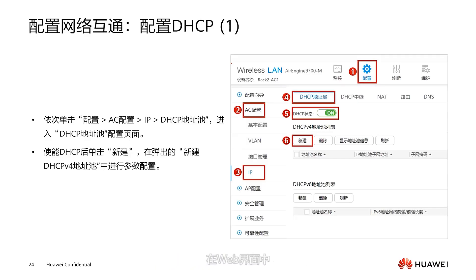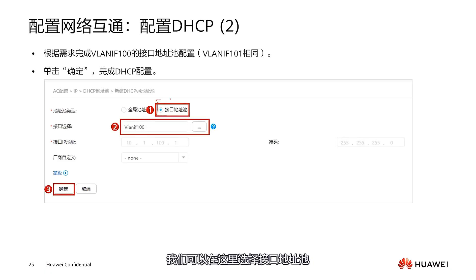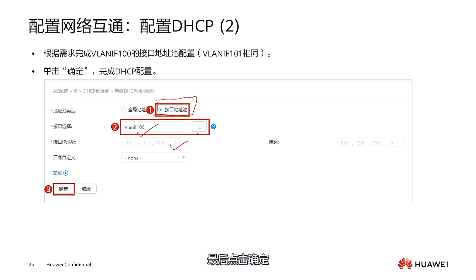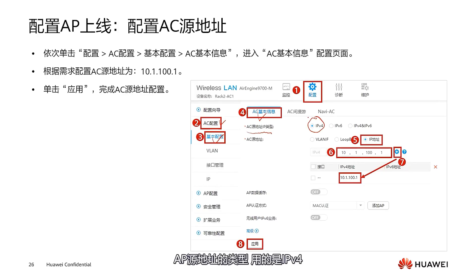The DHCP service needs to be started next. On our AC device, using the command line we would use 'DHCP enable'. In the web interface, first select IP in the AC configuration, and we will see the address pool configuration. Make sure the DHCP status is enabled, then select New. We can select the interface address pool here — unlike the global address pool, the interface address pool only assigns addresses to users coming from that specific interface. Select VLAN IF100 as the interface; the IP address has been determined. Click OK and our DHCP configuration is completed. The configuration for VLAN IF101 is similar.